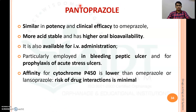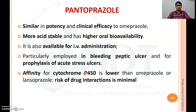Another commonly available PPI is pantoprazole, available under brand names like Pantop, Pantodac, etc. It has similar potency and clinical efficacy as omeprazole but is more acid stable with higher oral bioavailability. It is available as IV administration, particularly employed in bleeding peptic ulcer and prophylaxis of acute stress ulcer. Its affinity for cytochrome P450 enzyme is lower than omeprazole or lansoprazole, so the risk for drug interaction is minimal — that is why pantoprazole is preferred over omeprazole, though it is costlier.